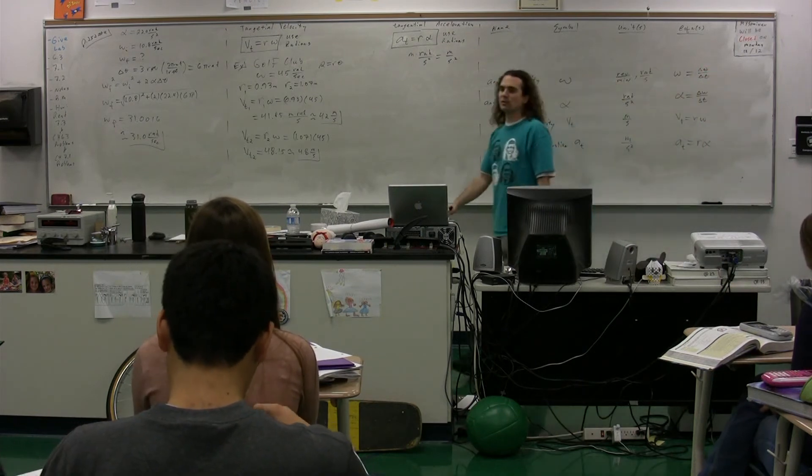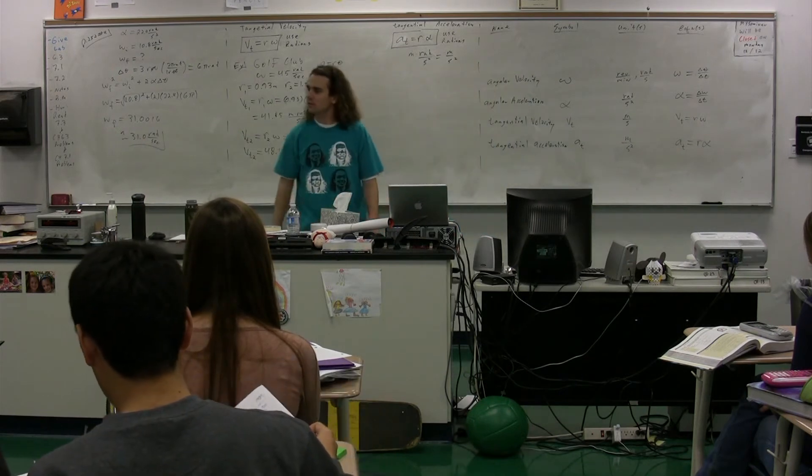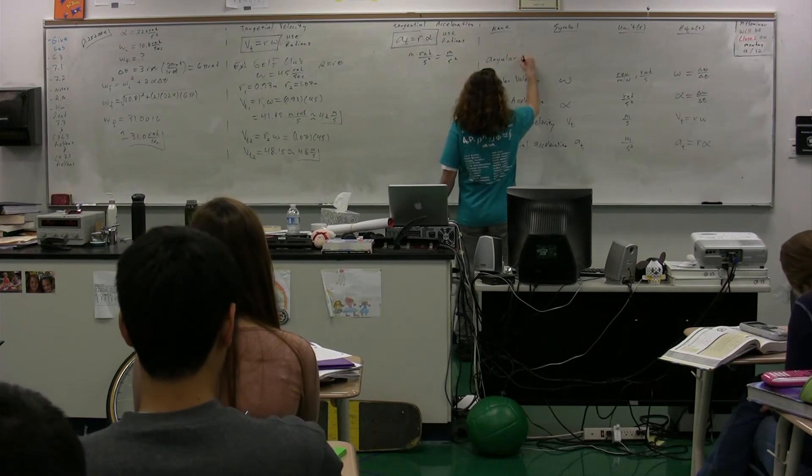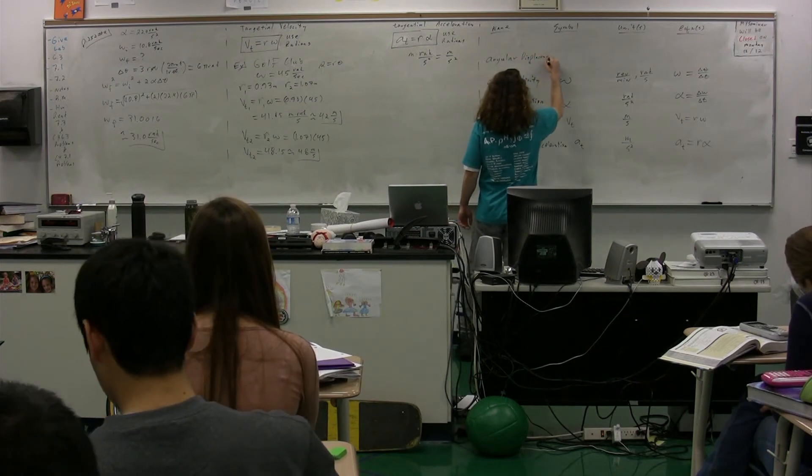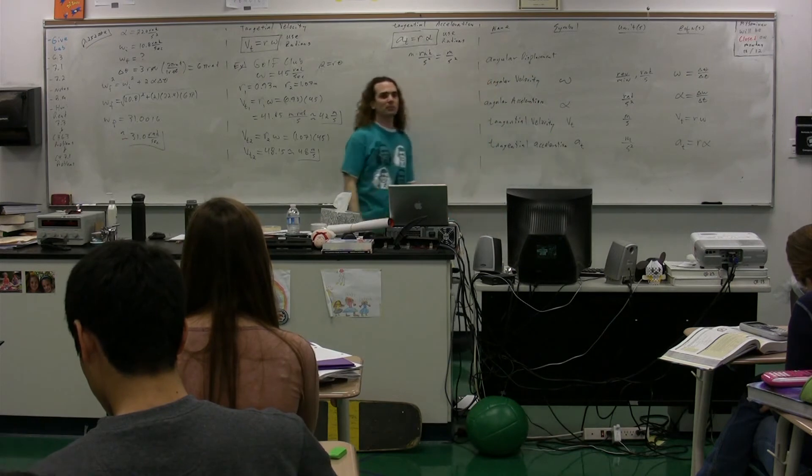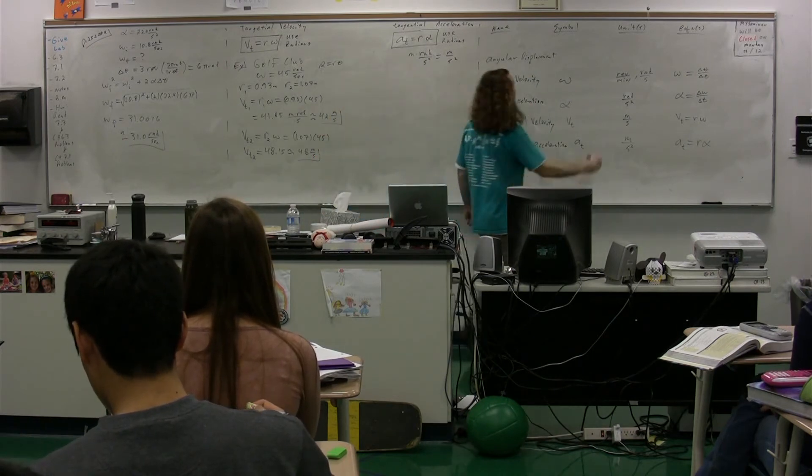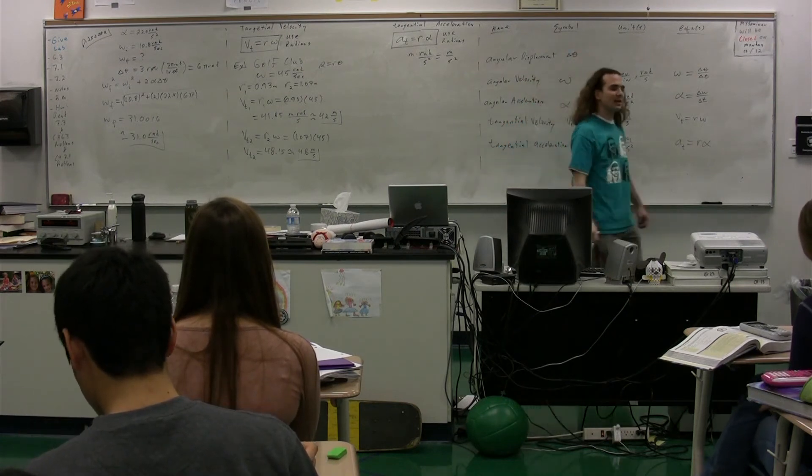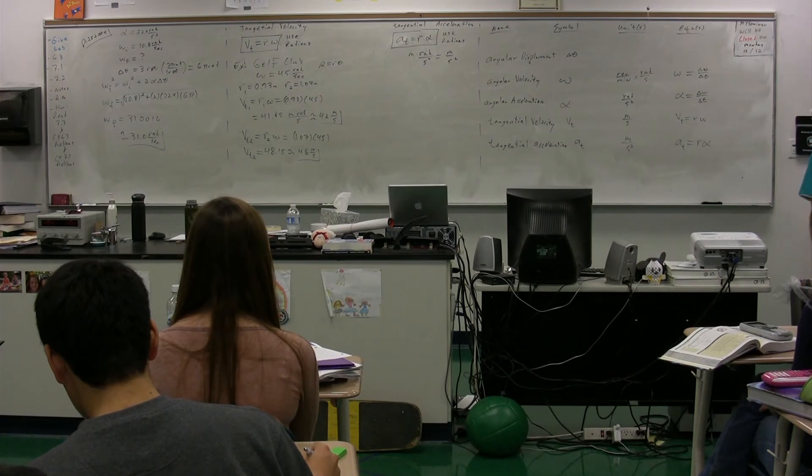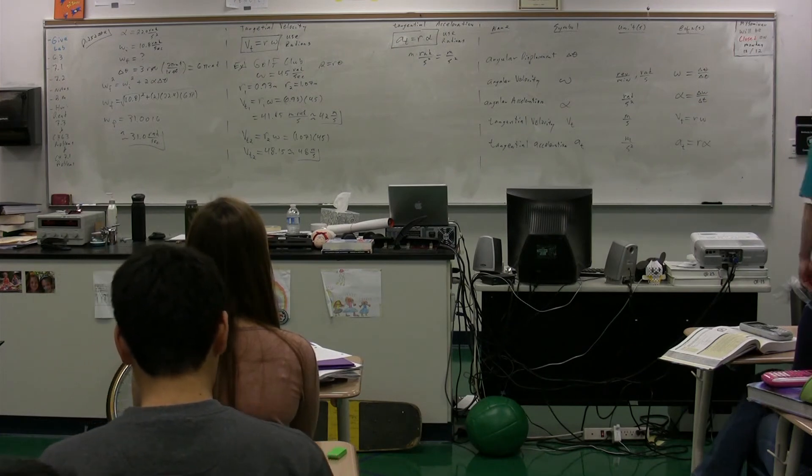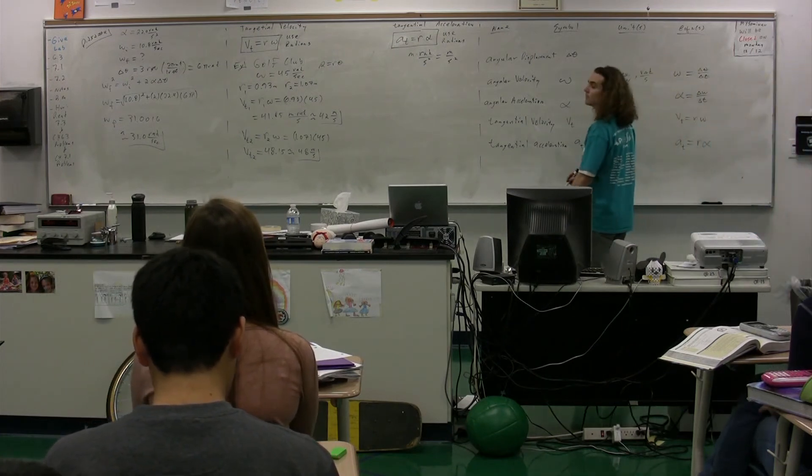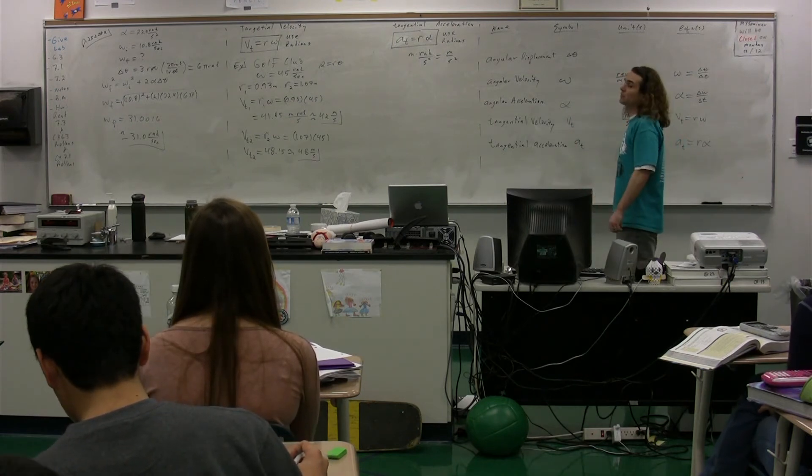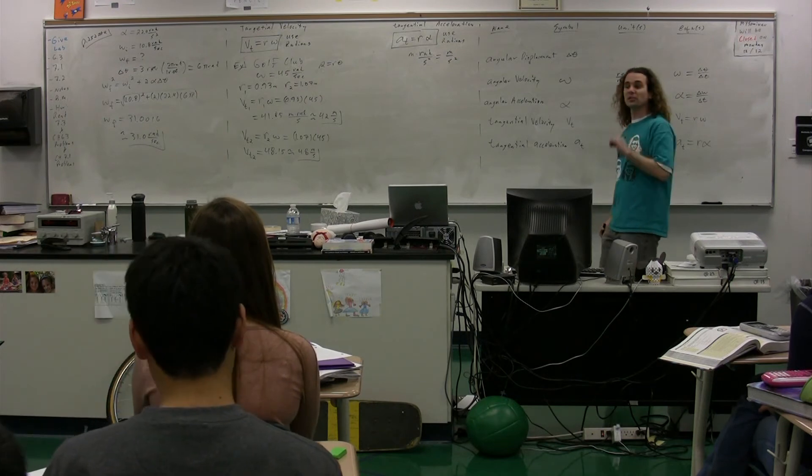We have two more friends to add to our table of friends, Edward. Angular displacement. Angular displacement is the second one. The symbol for angular displacement, who would be, is? Delta theta. Delta theta. Dimensions for angular displacement. There are a whole bunch, three that I can think of for angular displacement. Vandy, give me all three. Meters. No, not for angular displacement. That would be for linear displacement, it would be in meters.